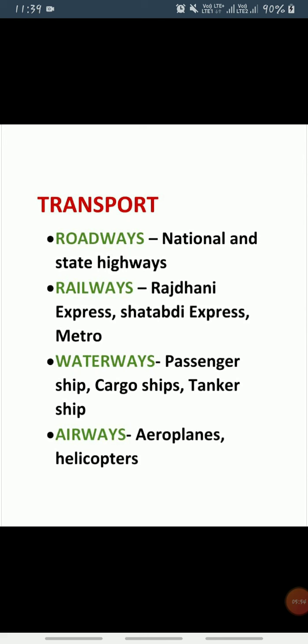India has both a western coastline and an eastern coastline. There are 13 major ports and 200 minor ports. Deen Dayal port in Gujarat and Paradeep port in Odisha are the biggest among the major ports.